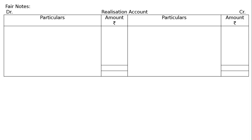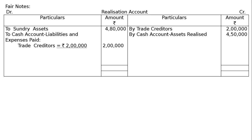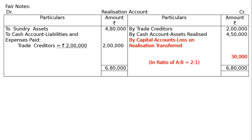Next, we prepare the realization account. Debit side: sundry assets rupees 4 lakh 80,000; trade creditors rupees 2 lakh. Credit side: cash account — assets realized rupees 4 lakh 50,000 (given in the question); cash account — liabilities and expenses paid, trade creditors rupees 2 lakh paid in full.